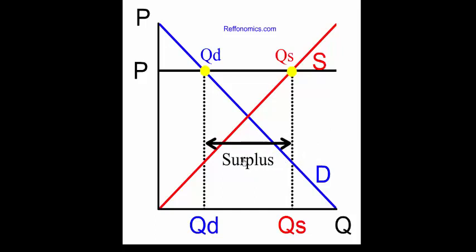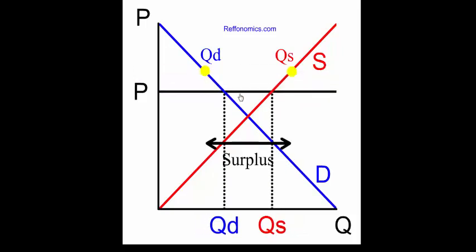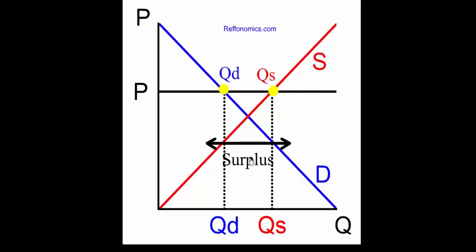Because of that surplus, if the markets are allowed to adjust, the price will drop in the marketplace. The quantity supplied will go down at that lower price, but the quantity demanded will go up. At this price, there is still a surplus in the marketplace, but the surplus is smaller.